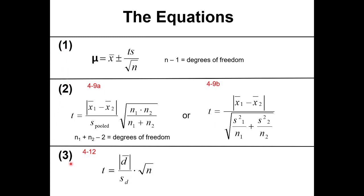For the Case 1 t-test equation, the formula is essentially the confidence interval formula. The confidence interval uses t times S divided by the square root of n, for n minus one degrees of freedom, where n is the number of trials.